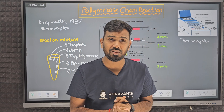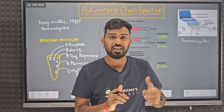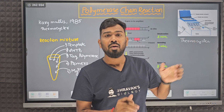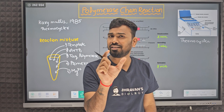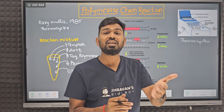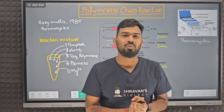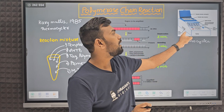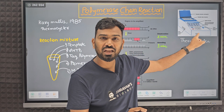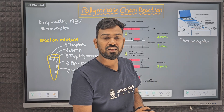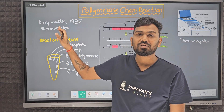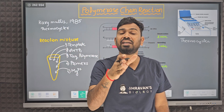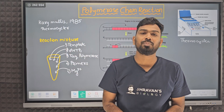Molecular biology or biotechnology has been a revolution. This invention has been a big revolution. Because if you have a desirable gene and you want to make billions of copies of it within a short span of time, it is possible with the help of this machine called Thermocycler or PCR. This was invented by Kary Mullis in 1985, and in 1993 he also received the Nobel Prize.